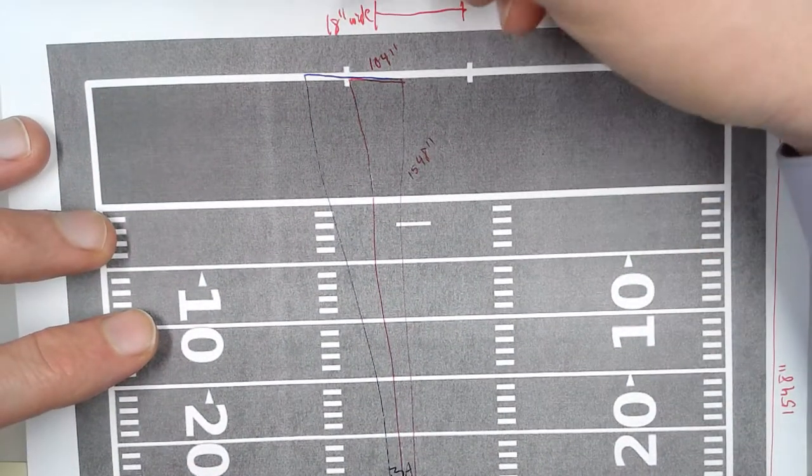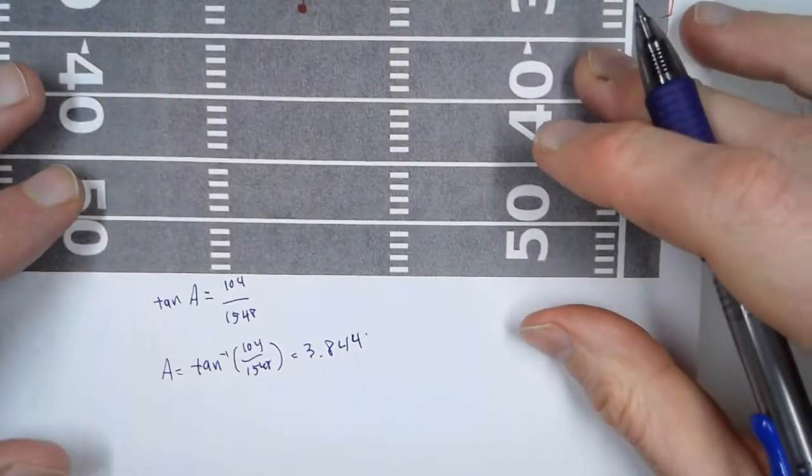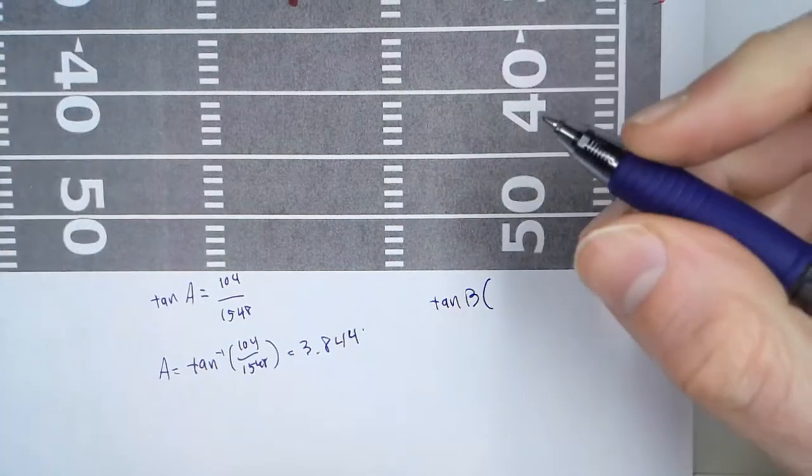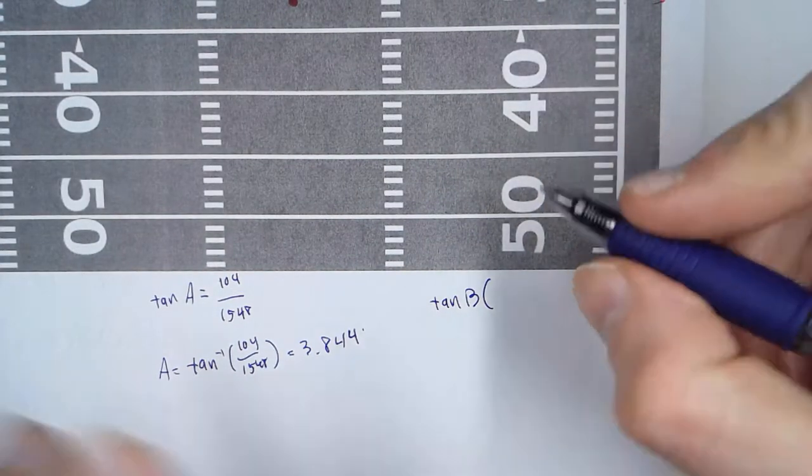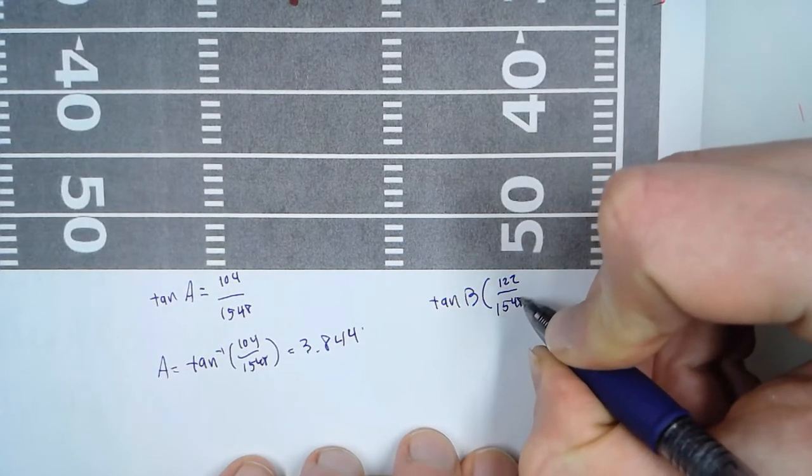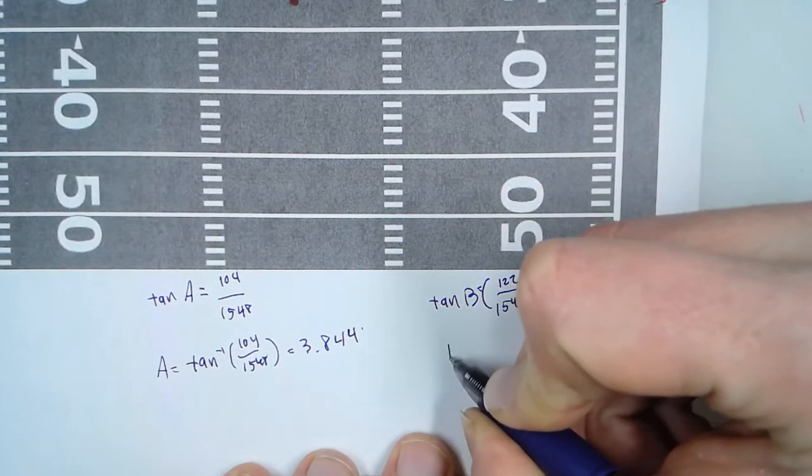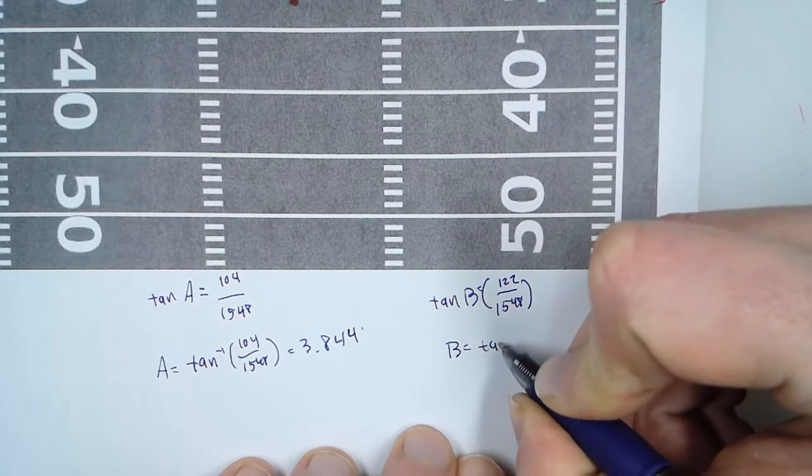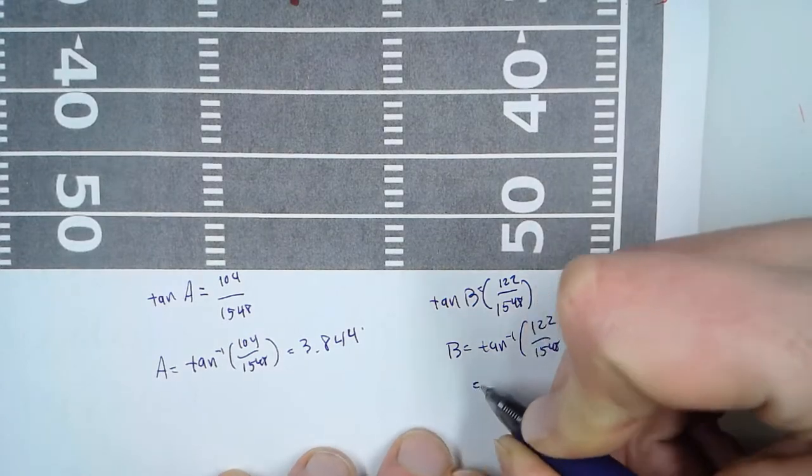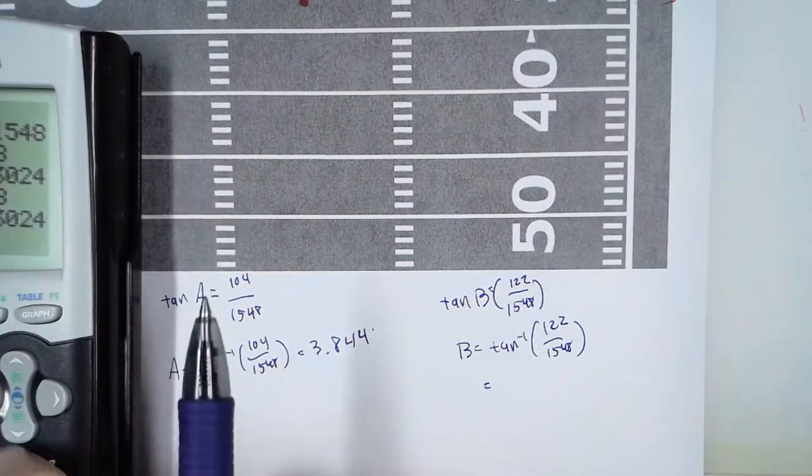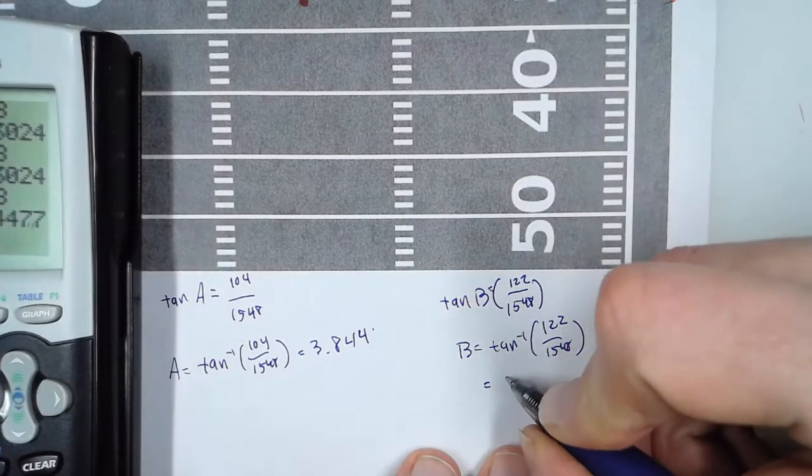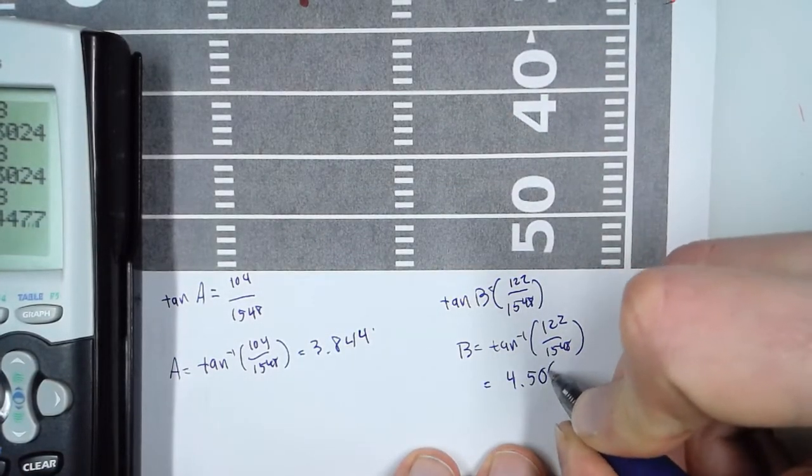So we're going to take 104 and tack on 18 extra inches to that. So 104 plus 18 is 122. Now the distance is still the same, 1548. So angle B is the inverse of that. And so we get an angle of, let's change 104 to 122. And so we get 4.506 degrees.